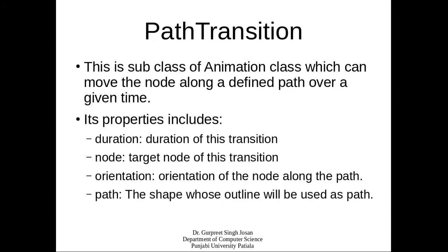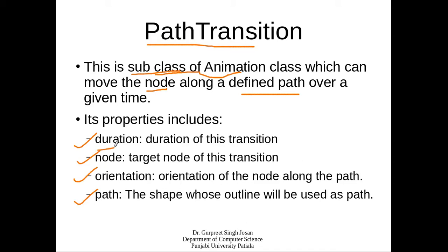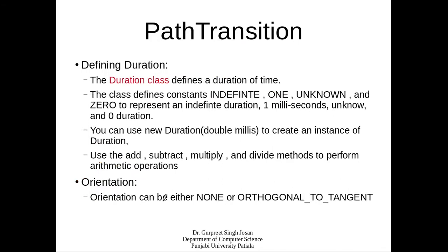PathTransition is a subclass of Animation class that can move a node along a defined path over a given time duration. Its properties include duration, node, orientation, and path, in addition to all properties inherited from the Animation class. Duration represents the duration of the transition; node represents the target node; orientation represents the orientation of the node along the path; and path represents the shape whose outline will be used as the path.